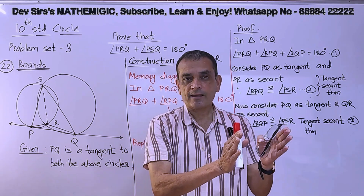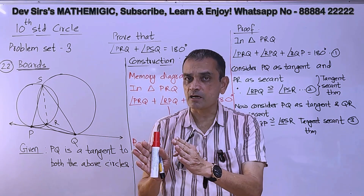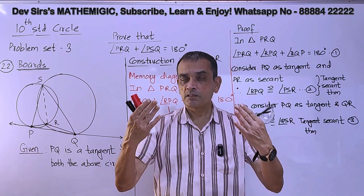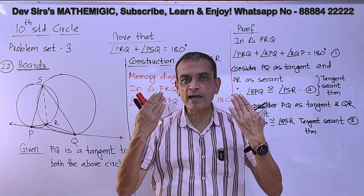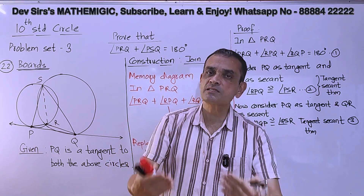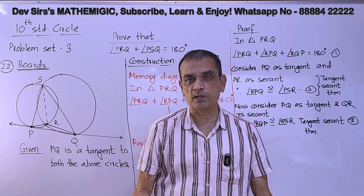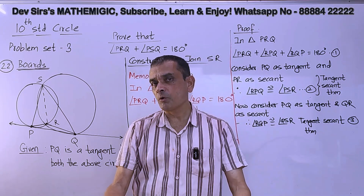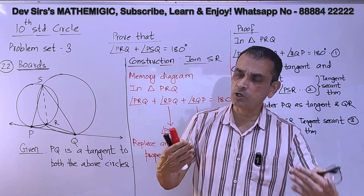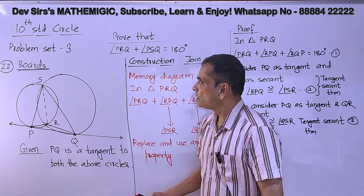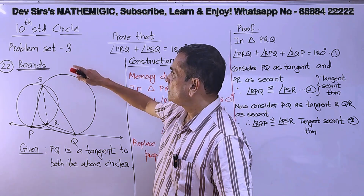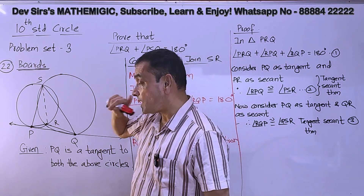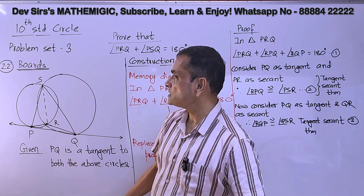The arrows indicate that you have to replace this angle using the memory diagram. If that memory diagram is in front of you, it will be easy to solve it. So let's straight away go to the problem. 10th standard circle problem set 3 — asked in one board exam for 4 marks.